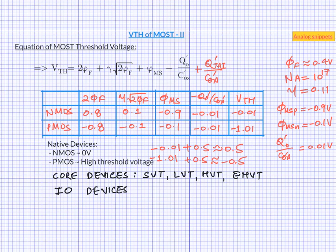Core and IO devices differ in their gate oxide thickness. For example, in modern technologies, core device gate thickness can be 10 to 20 angstrom or 1 to 2 nanometer. While gate thickness in IO devices can be 50 to 100 angstrom or 5 to 10 nanometers. Core devices differ in their threshold implants.